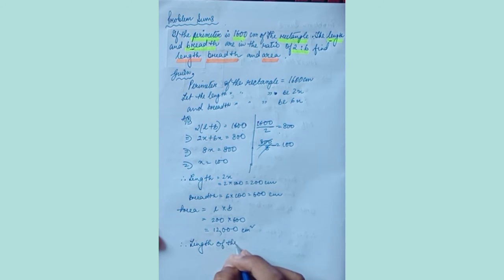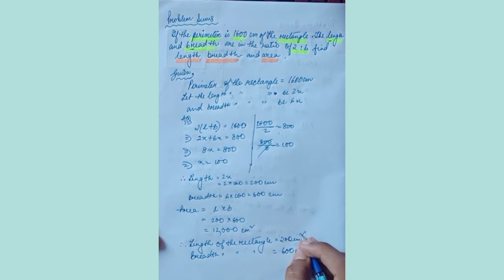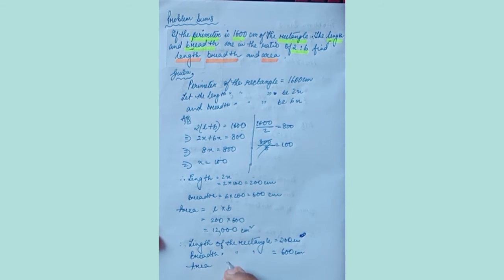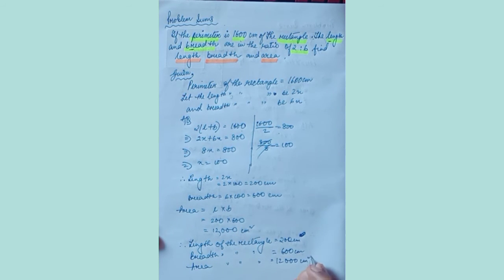Length of the rectangle is equal to 200 centimeters. Breadth of the rectangle equals to 600 centimeters. Area of the rectangle equals to 12,000 centimeter square. Length and breadth are always in centimeters. Perimeter is also in centimeters.